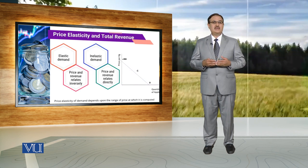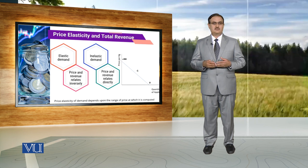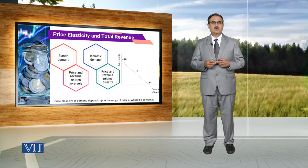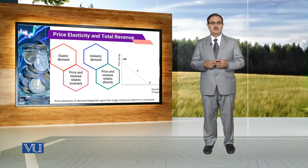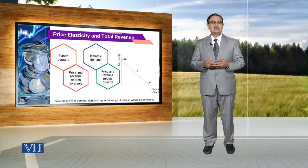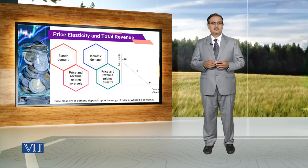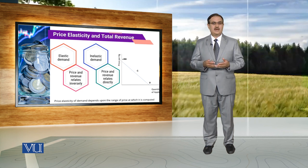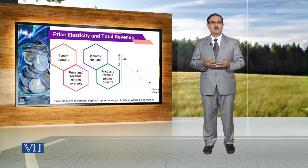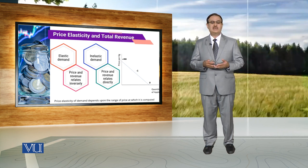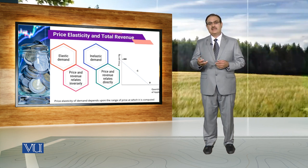Depending upon the nature of the elasticity of demand, Total Revenue will be different. If demand is elastic, then Price and Total Revenue are inversely related. In the elastic range of the demand curve, if the price of a commodity increases, Total Revenue will decrease.